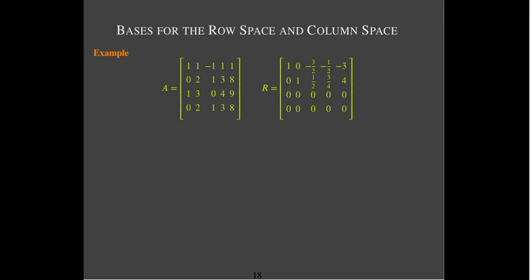Let's take an example. Here I have a matrix A — it has four rows and five columns, and I've already found the matrix R, which is the reduced row echelon form of A. We'd like to find bases for our four fundamental matrix spaces. Let's start with the row space. I can see that there are two rows which are not all zeros, so those rows, considered as components of a vector, will form the basis vectors for the row space.